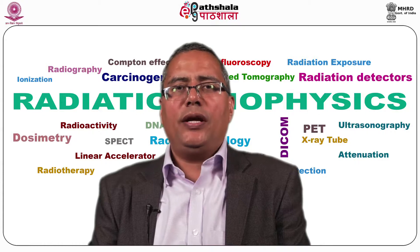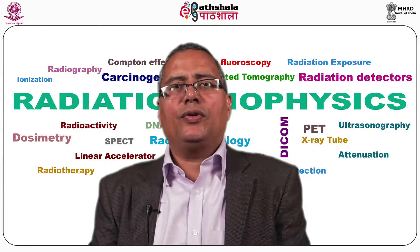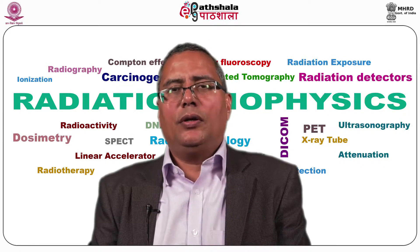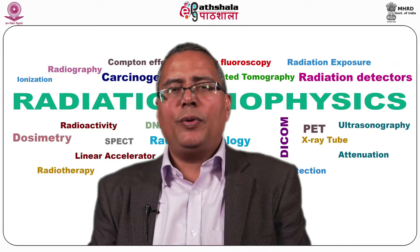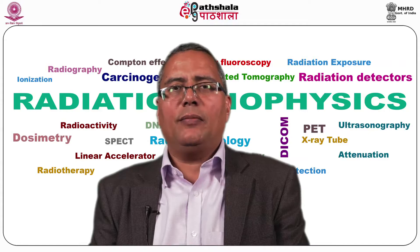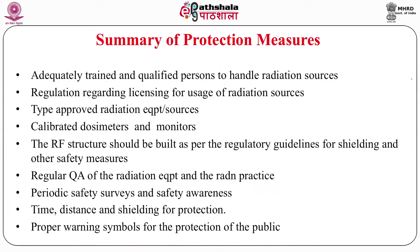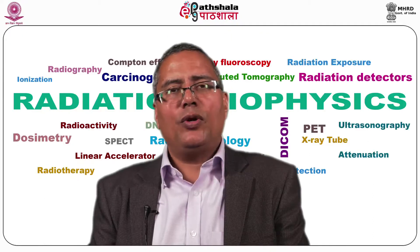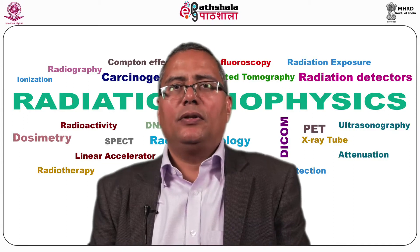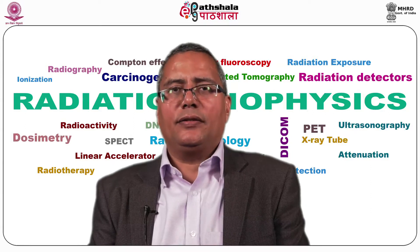To summarize radiation protection measures: trained radiation professionals authorized by AERB must be employed; radiation facilities must comply with AERB safety codes regarding shielding, monitoring equipment, and safety measures; regular quality assurance and calibration of radiation-generating and radiation-measuring equipment must be carried out at periodic intervals; radiation warning symbols must be placed at conspicuous locations; and all radiation workers must follow safety guidelines.